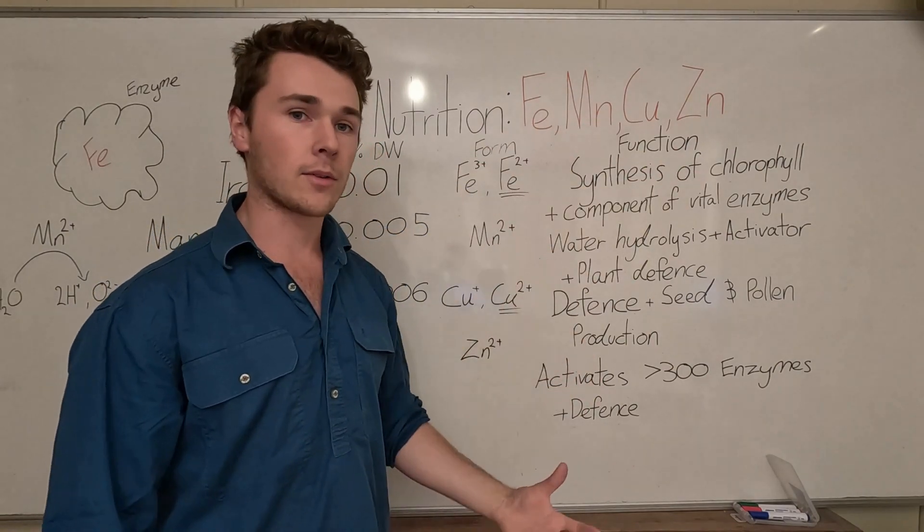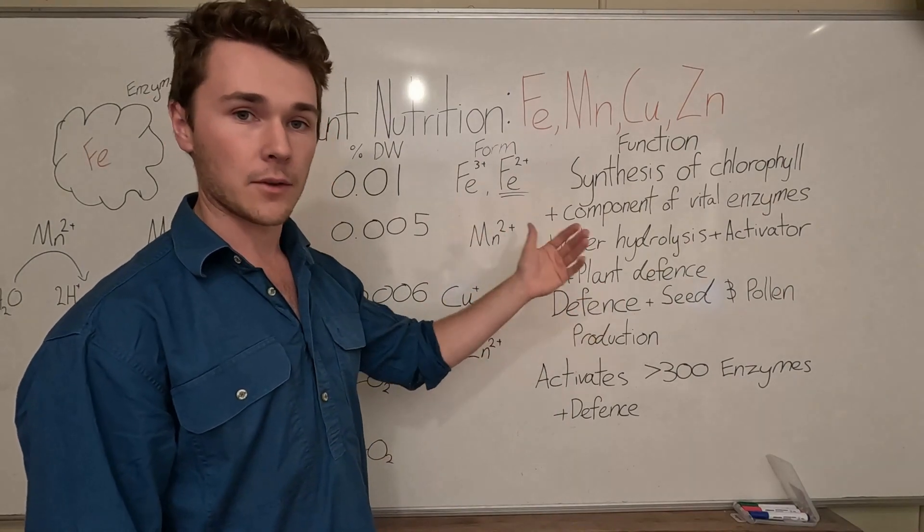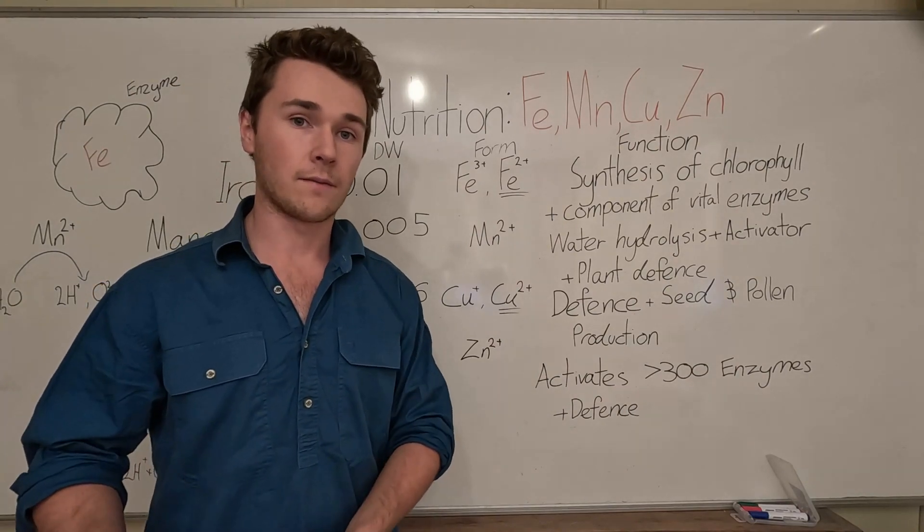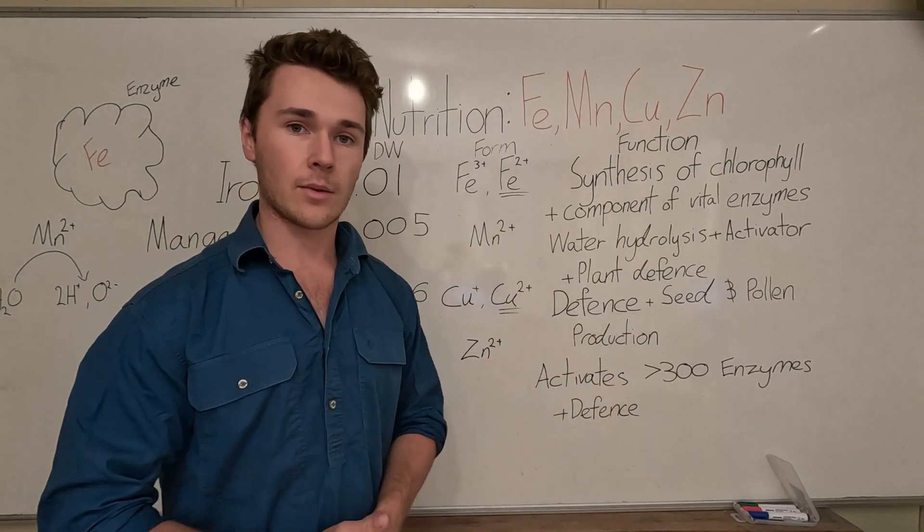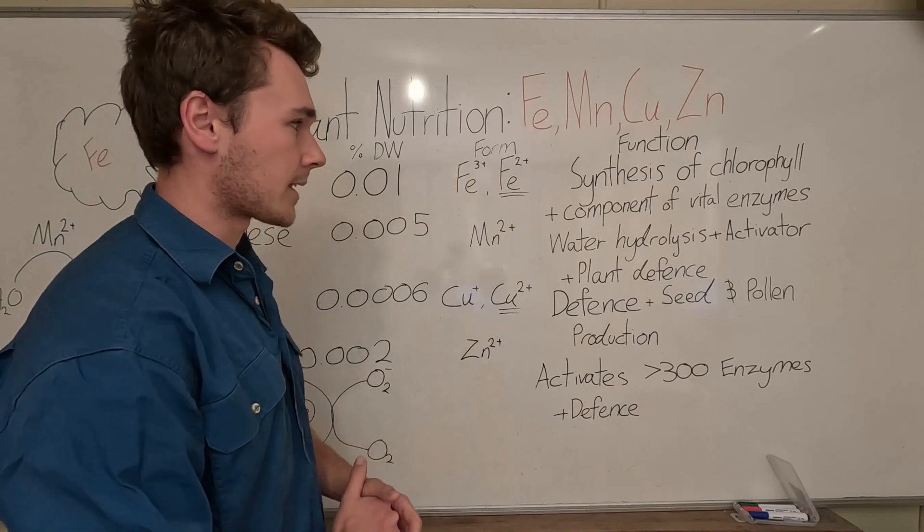When they don't have iron they can't synthesize chlorophyll and the plant can't photosynthesize. Which means it's very important, super important that we have iron so that the plants can then photosynthesize. Photosynthesis is ultimately the way that plants produce their own food. If we don't have this engine going, the plant's not going to be able to produce its own food and so it can't grow and make us money.